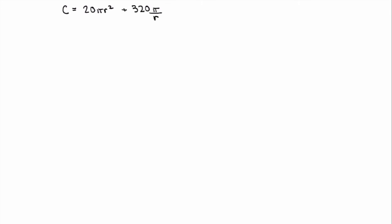We now have our cost function as a function of a single variable r, the radius of the can, and we want to find its absolute minimum, since that tells us when the can is most economical to construct. To do that, we need to specify the domain: the radius cannot be negative or zero, but can be anything above zero. This is not a closed interval, so we can't use the closed interval method. We need to find the critical numbers and argue that a local min is also an absolute min over the whole interval.